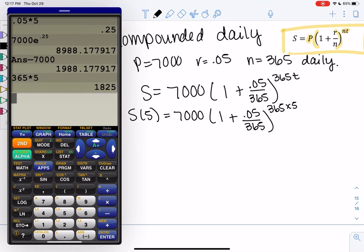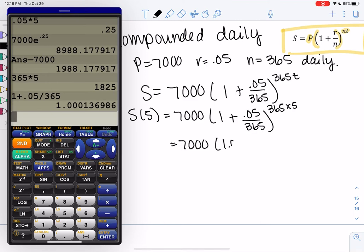So it's a power of 1865, and then 1 plus 0.05 over 365. Keep a lot of decimal places. So we get 1.0001, 36986, all to the 1825 power. Otherwise, if you can, I'm going to type everything at once. It's a little bit more accurate.